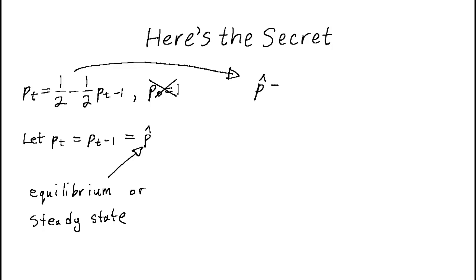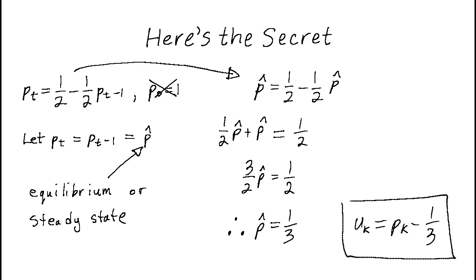Moving on, what we have is an equation for p hat. We can solve this equation to find that p hat is equal to one-third. It was this value we subtracted from p sub k to create our new variable.